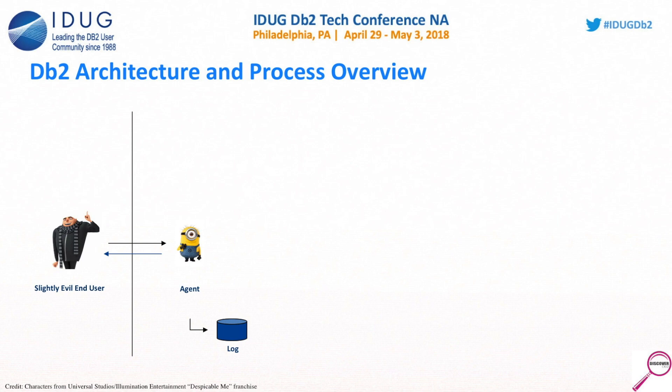Now, depending on whether you have a multiprocessor environment or you are in a warehouse environment with the data partitioning feature, you may be assigned sub-agents. This is not always the case — you could have zero to many sub-agents. If you are assigned sub-agents, it's just to help you do more work in parallel to make more efficient use of the resources you have access to.